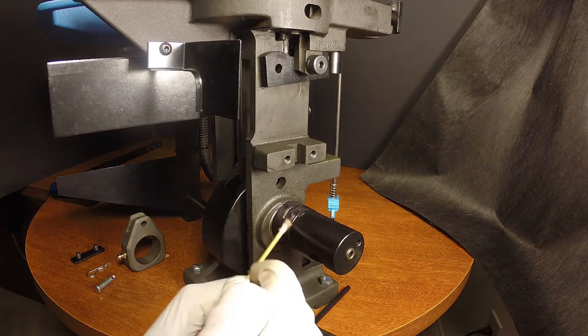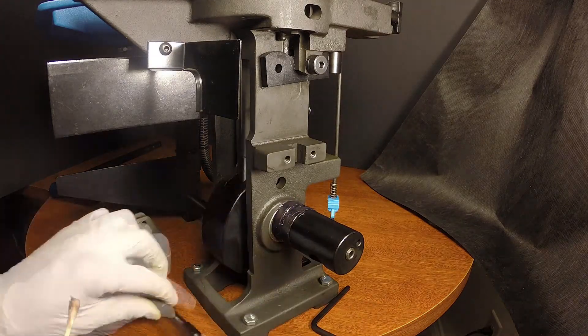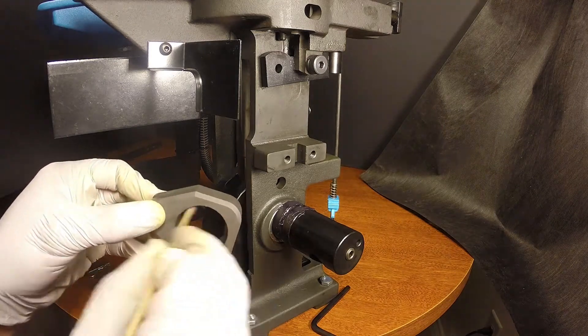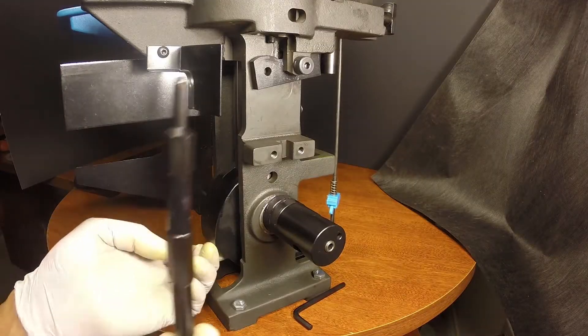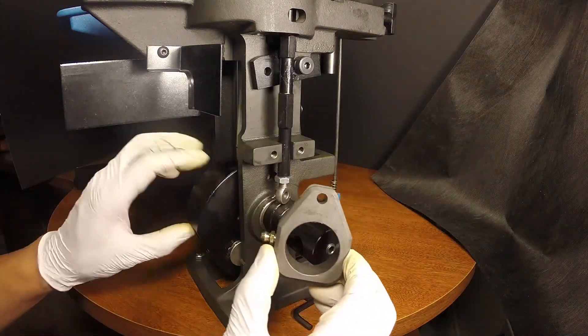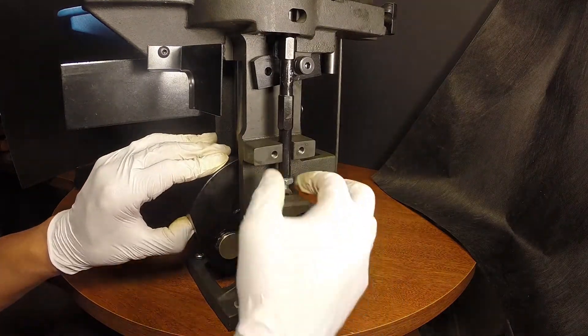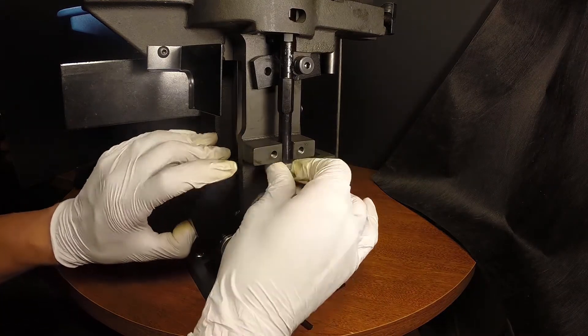Apply grease to the crankshaft, the swage assembly, connecting rod, and clevis pin. Reinstall the swage assembly, connecting rod, the clevis pin, and secure with the hitch pin.